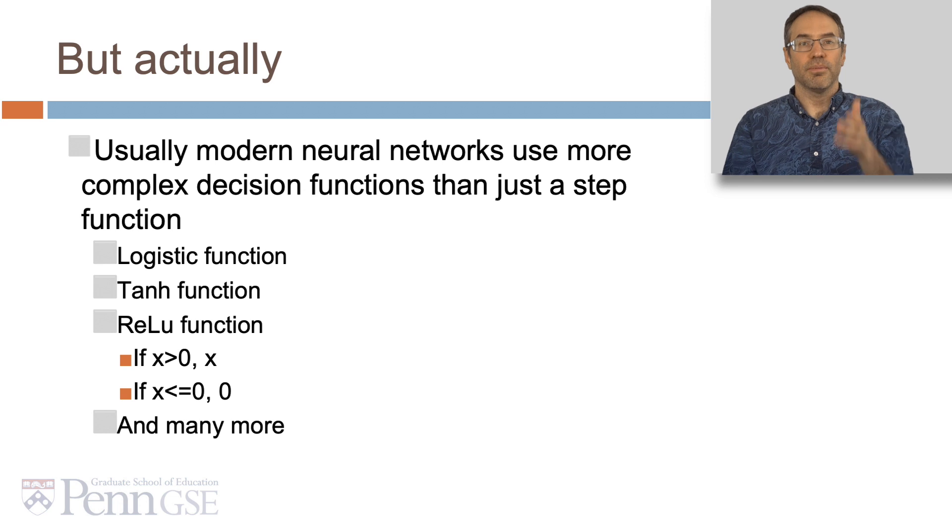Now that's a classic perceptron, but actually, usually modern neural networks use more complex decision functions than just a step function. They might use a logistic function, a tanh function, or a ReLU function. A ReLU is that if x is greater than 0, x, and if x is less than or equal to 0, 0. And they use many more.